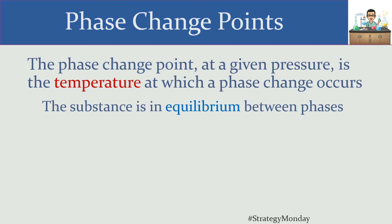When we're right at that phase change point, we're not really one phase, we're not really another — we could be either or. If we're getting literal, driving a car on a border between cities, a portion of your car is in one city and a portion is in another. So a substance is in equilibrium between phases whenever it reaches that phase change point.